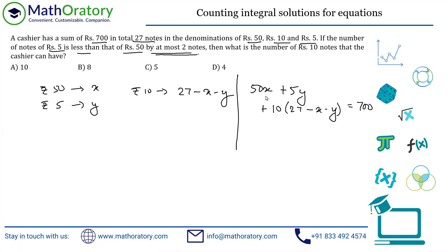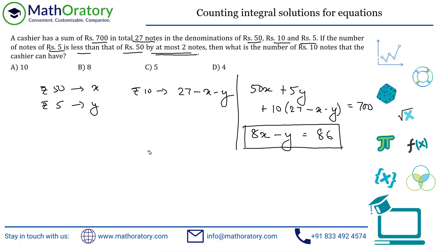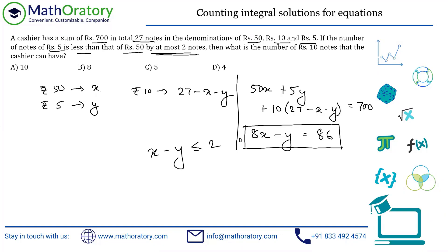So we know 8X − Y = 86. The constraint from the problem is X − Y ≤ 2, meaning the number of ₹50 notes exceeds ₹5 notes by at most 2. Also, X + Y cannot exceed 27 since total notes are 27. Now I need integral solutions for X and Y.